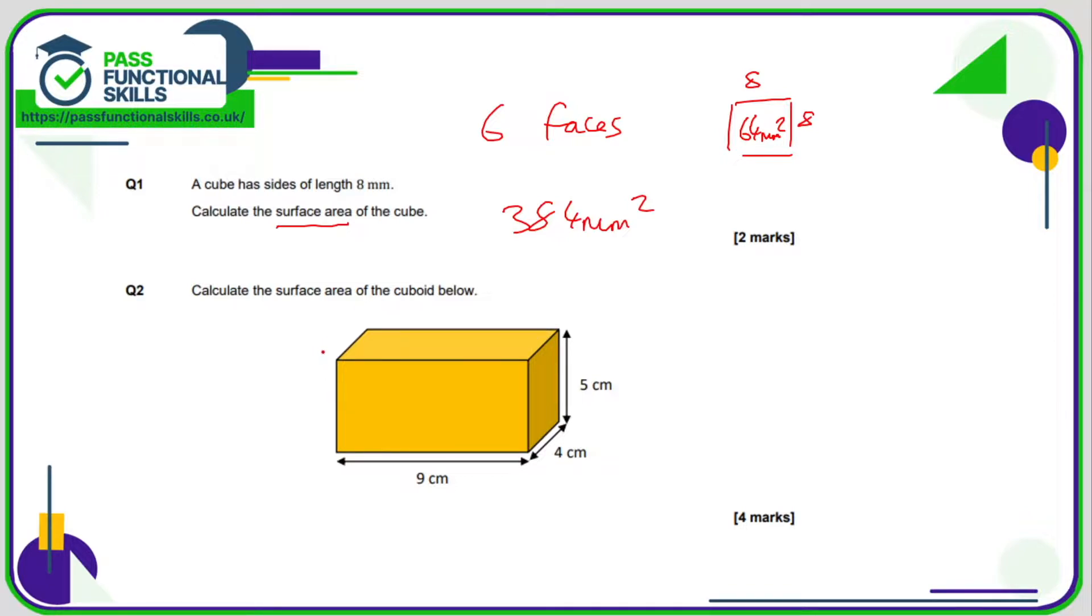Question two: calculate the surface area of the cuboid below. Well we know the front is nine by five and the back will also be the same, so it's gonna be nine by five doubled. Nine times five is 45, 45 times two is 90, so it's gonna be 90 square centimeters, and I'll just make a note here that is the front and the back.